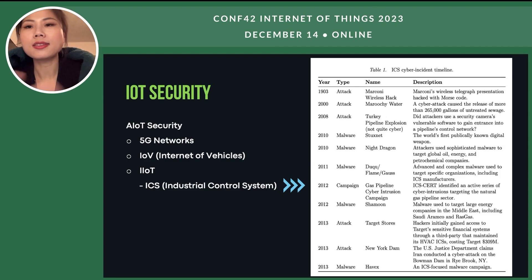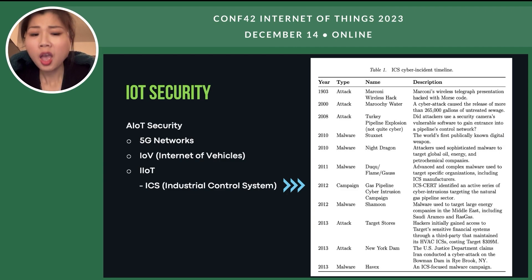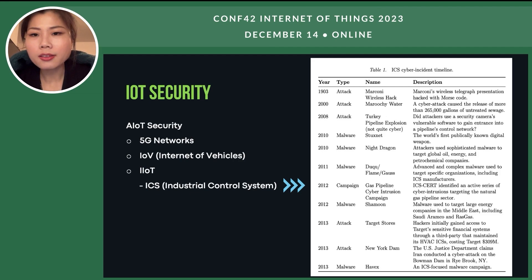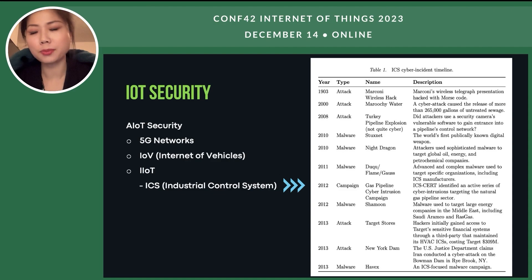On the right side there is a timeline of ICS cyber incidents — these are real cases that have happened since 1903. Take 2012 for example: there was a campaign called the Gas Pipeline Cyber Intrusion Campaign. This pipeline is very crucial infrastructure, even for the nuclear industry. If it had been hacked by AI, it would potentially not just kill a couple of persons — it would dramatically destroy a city or even an entire country. We must prioritize AIoT security as soon as possible.